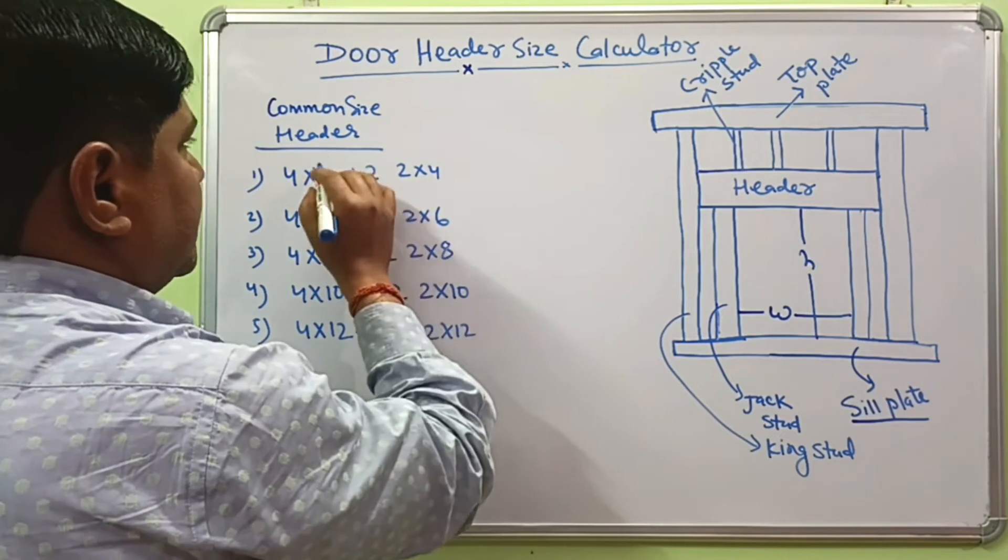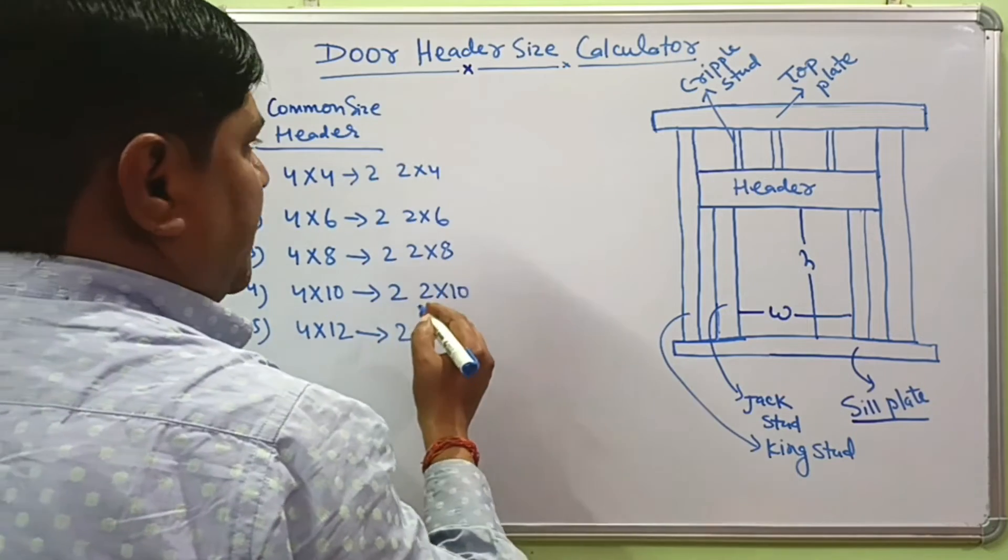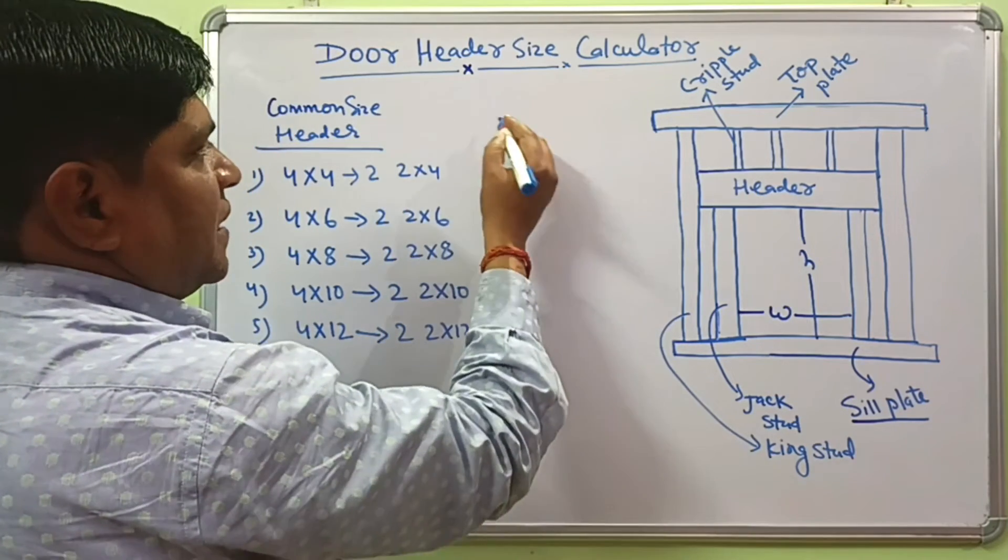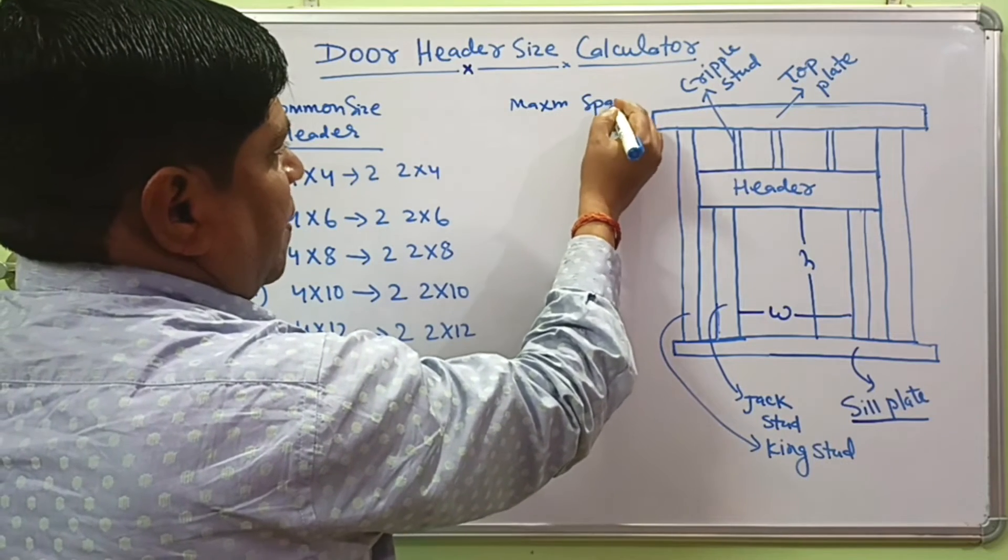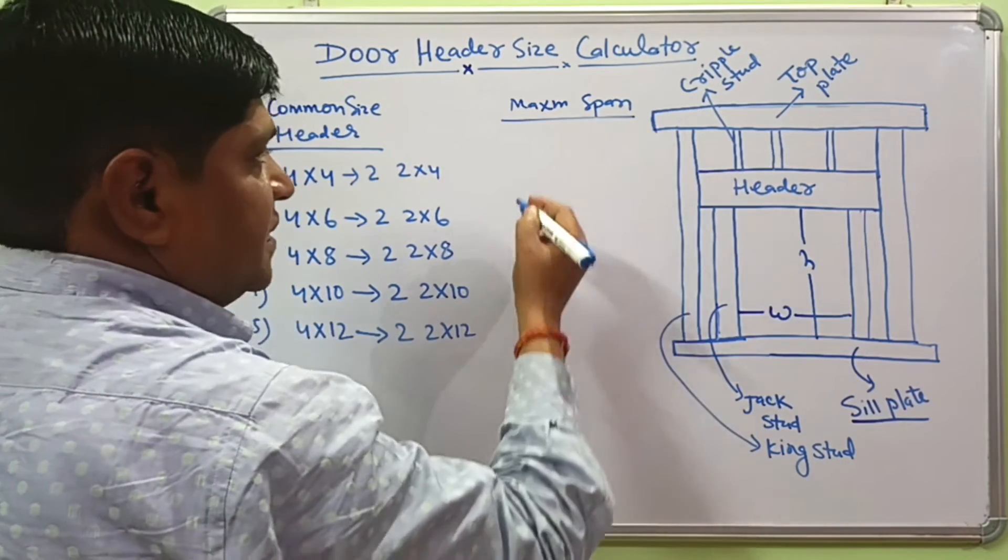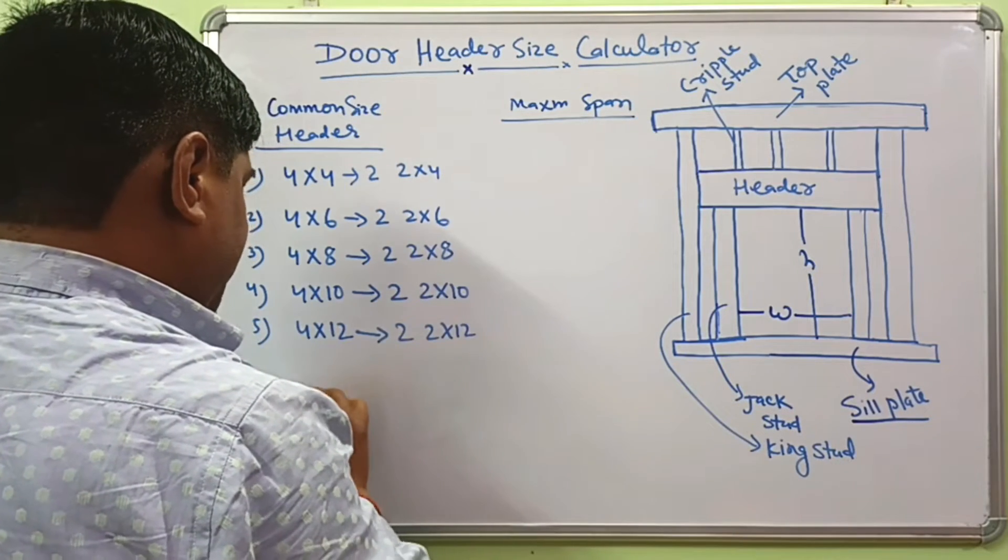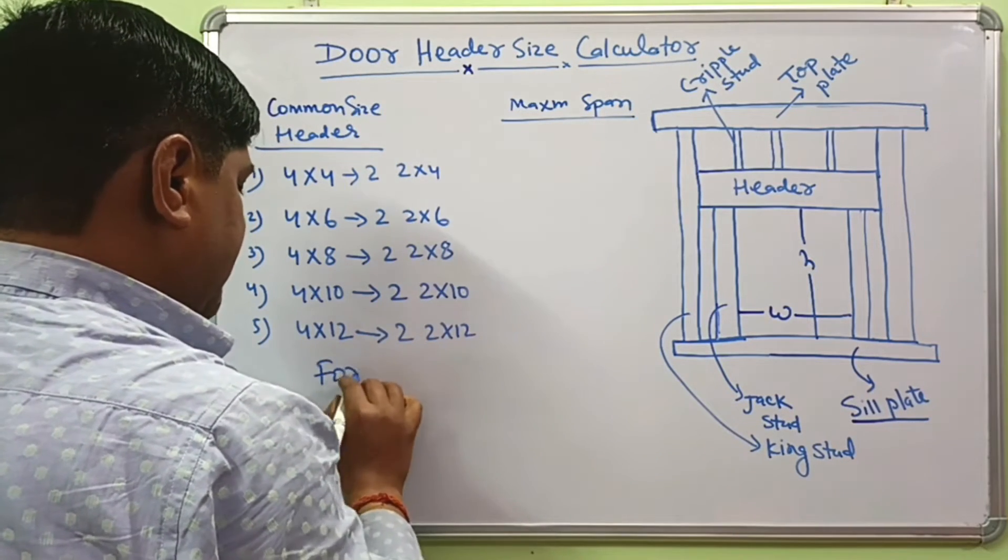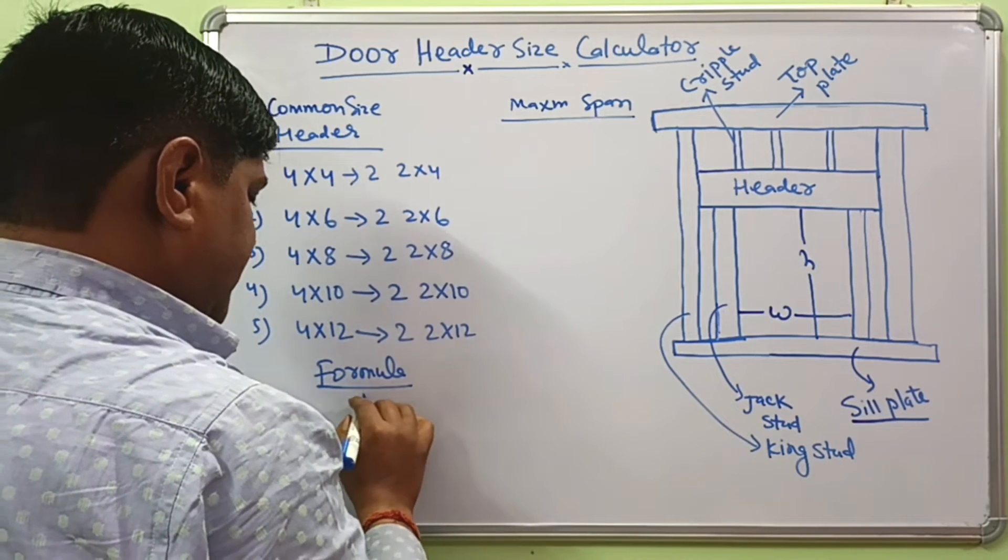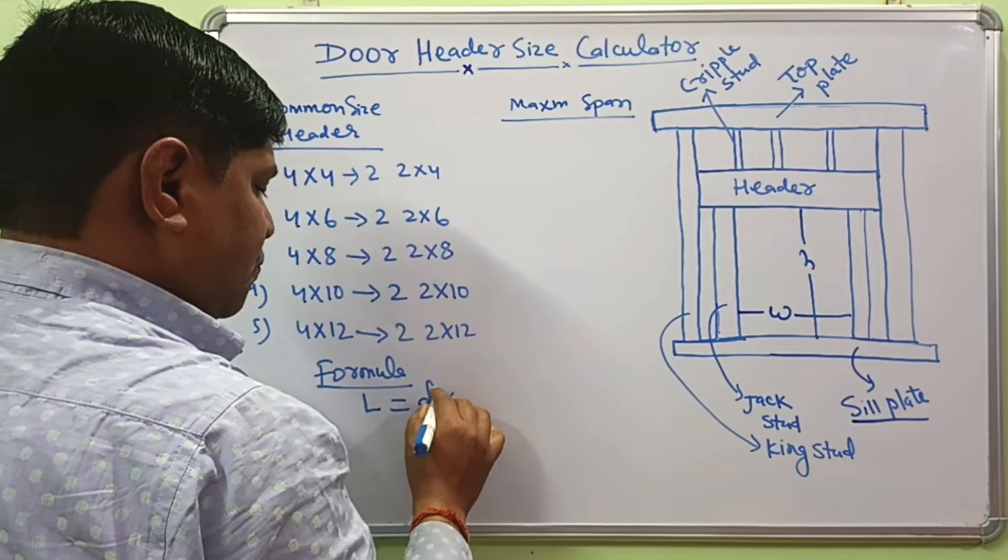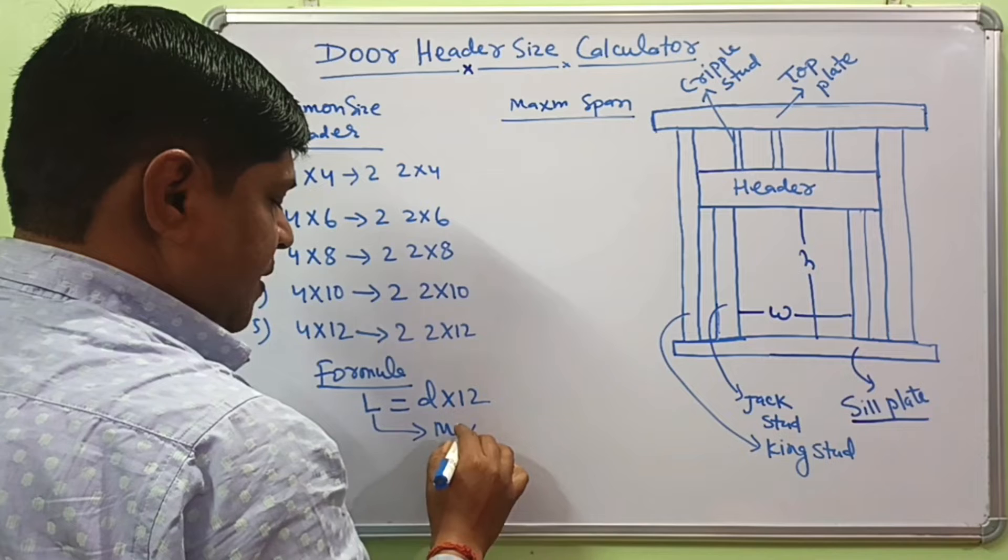This is the most common header size used for door opening. And how we can determine maximum span of this header size. You can use the calculator to determine the header size. Here is the formula to determine the span of this header size. L equals D times 12, where L is the maximum span.